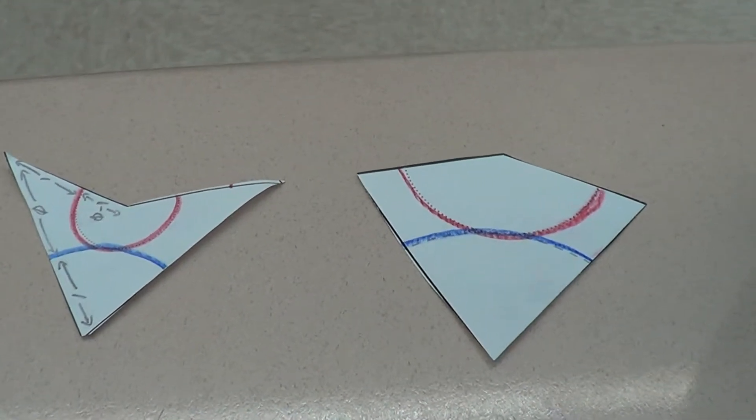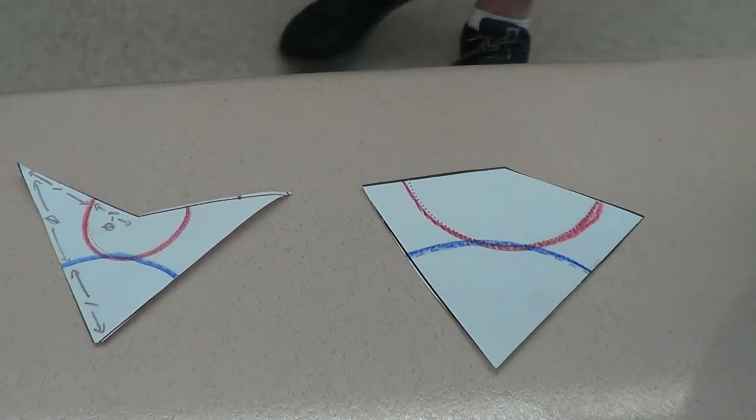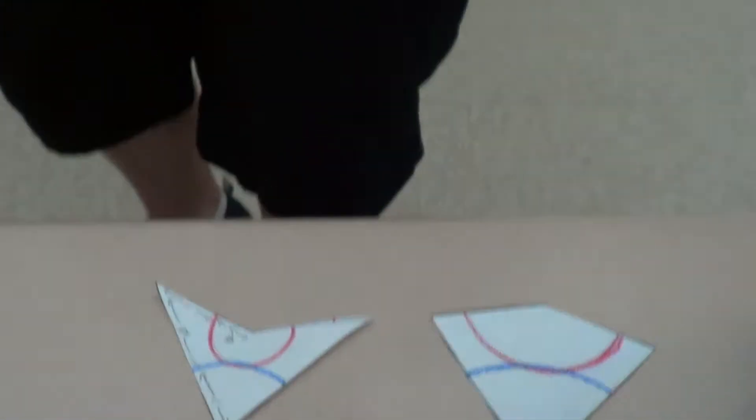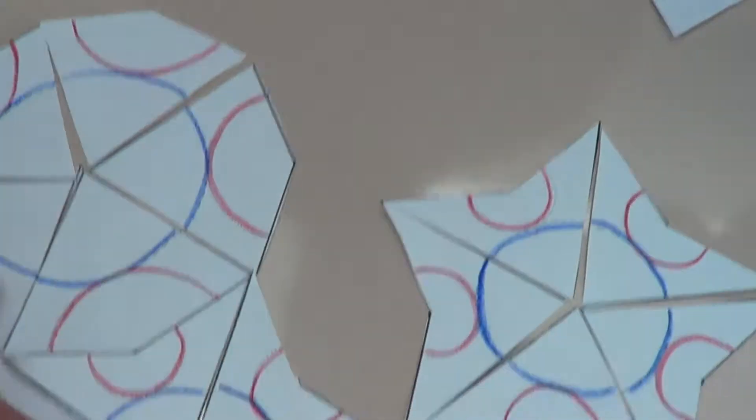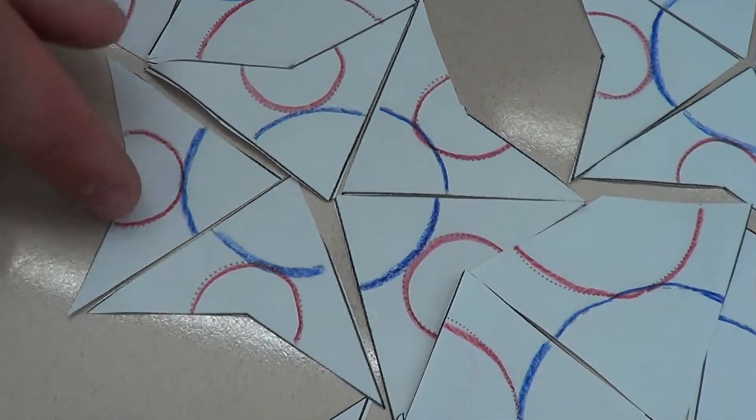The interesting thing about these is that it's much harder to translate a shape across, and yet there's only two different kinds of shapes.